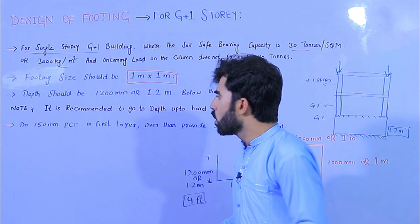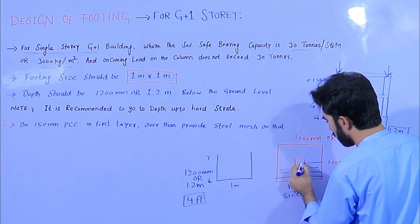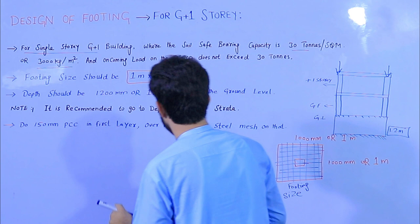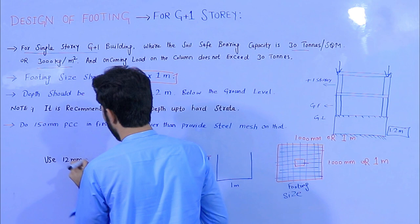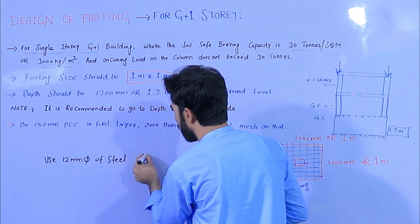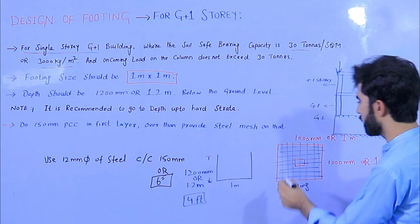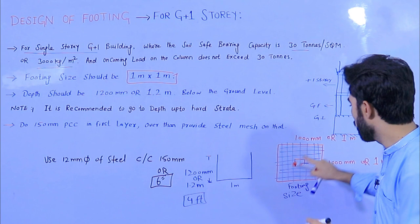Now, what should be the steel reinforcement details in this footing? Use 12 millimeter diameter steel for both main bars and distribution bars, with a spacing of 150 mm or six inches. The 12 millimeter diameter steel should be used in this footing for G plus one story.